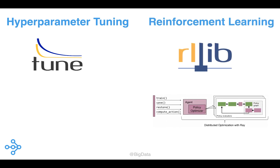RLLib is an open source library for reinforcement learning that offers both high scalability and a unified API for a variety of applications. It is already being used in several enterprises. For example, JP Morgan uses RLLib to power electronic trading models. As we start seeing more applications and use cases for reinforcement learning, we expect RLLib to attract a large share of developers needing to integrate reinforcement learning into their applications.